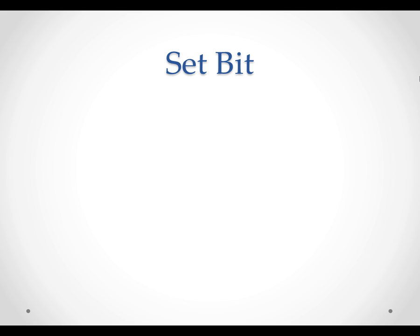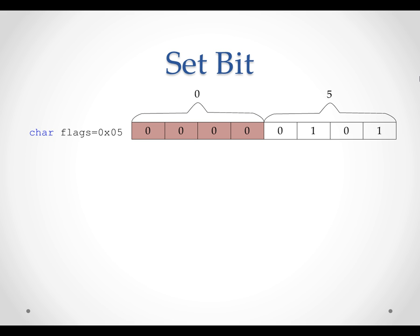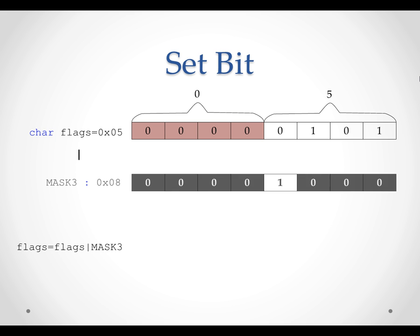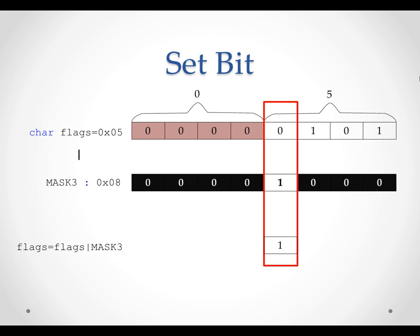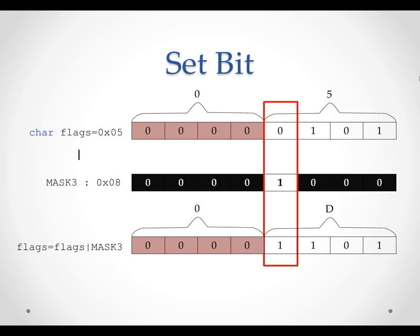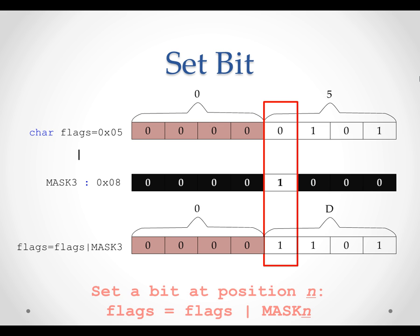Originally we do not have an apple, as bit 3 is 0. Now we are given an apple and we need to change bit 3 to 1. We can bitwise OR the flags with mask 3, whose bit 3 is 1 and all other bits are 0. 1 OR 0 equals 1. 0 OR 1 equals 1. 0 OR 0 equals 0. Hence the result of the bitwise OR operation is that bit 3 is set to 1 and all other bits remain unchanged. We have an apple now by setting bit 3 of the flags. Conclusion: to set the bit at position N, bitwise OR the flags with mask N.